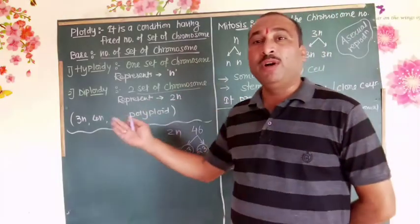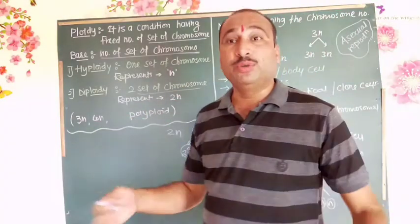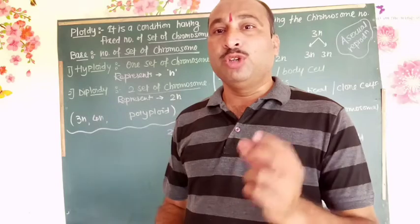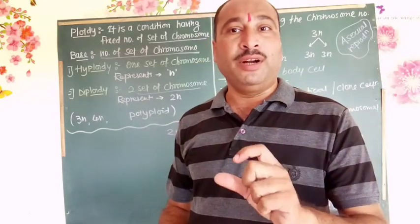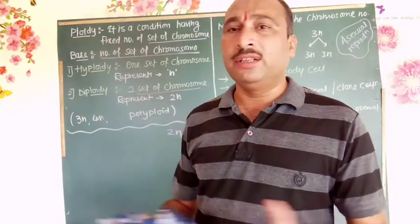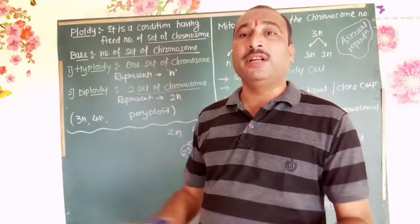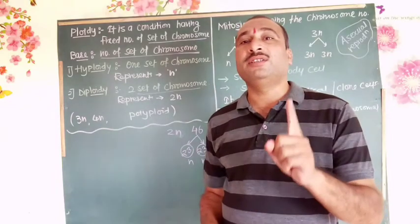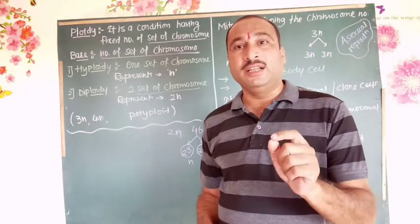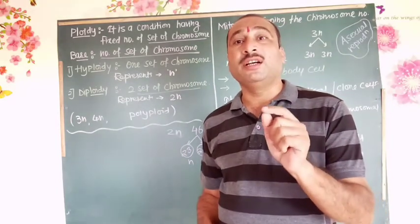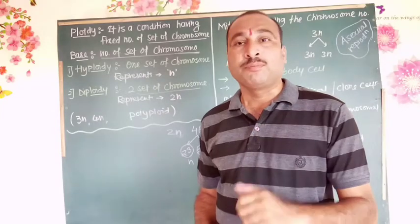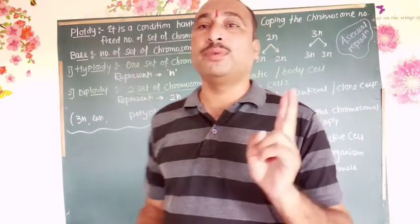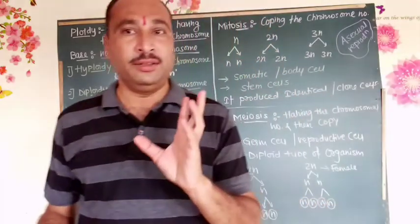In cell division, we have diploid and haploid — these are the key terms to remember. Haploid means a single cell containing only one set of chromosomes. Diploid means that in one cell there will be 2 sets of chromosomes.